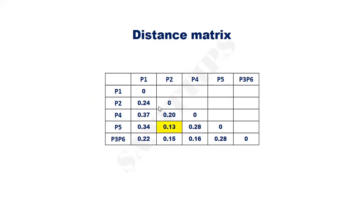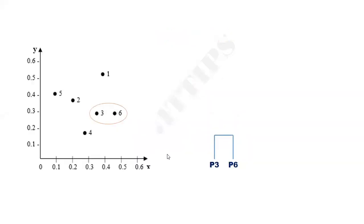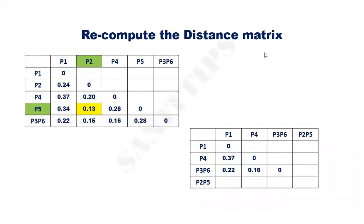Again, identify the smallest distance. It is 0.13. Hence, the closest pair is P2 and P5, so we can merge them together into one cluster. This is the corresponding dendrogram. Again, recompute the distance matrix. Now, P2 and P5 can be clubbed together as a single entry.